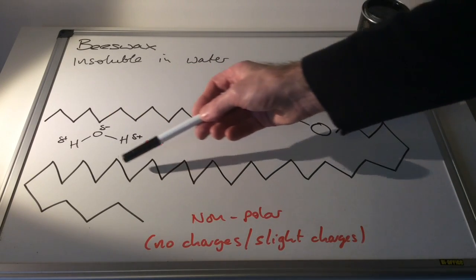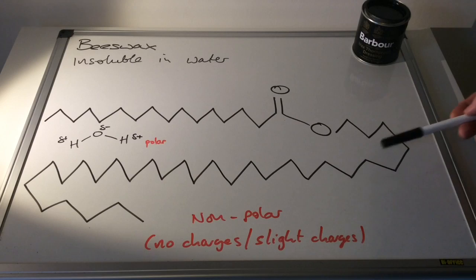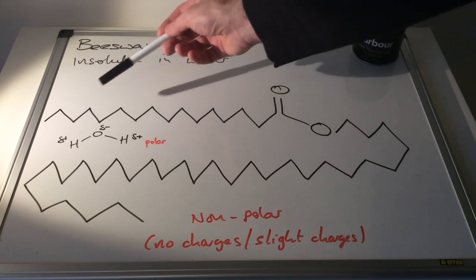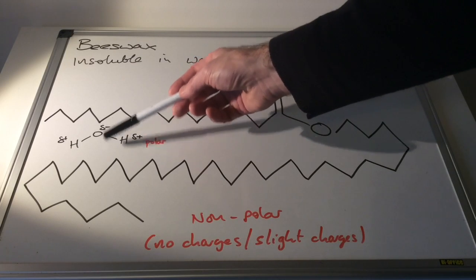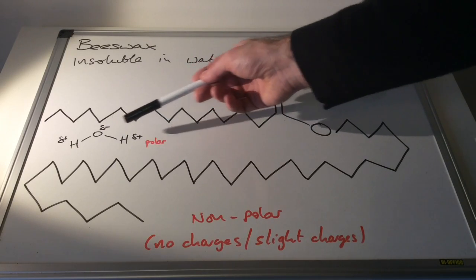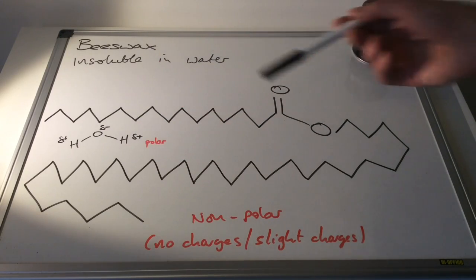So if this molecule is impregnated in your cotton jacket and it rains, water molecules are landing on your coat and they can't interact with each other. In other words, the water molecules would just slide off.